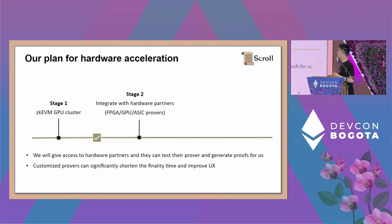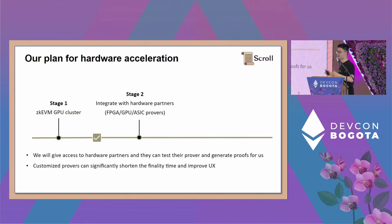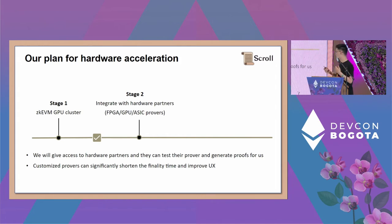In stage two, we give access to our hardware partners to run our prover — they can test their provers and generate proofs for us. Stage two is still for large partners committed to generating proofs for us. We believe using more customized provers can shorten finality time and massively improve user experience with cheaper proving and faster finality.